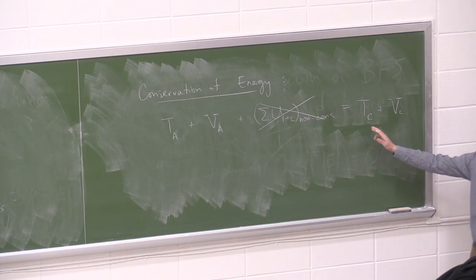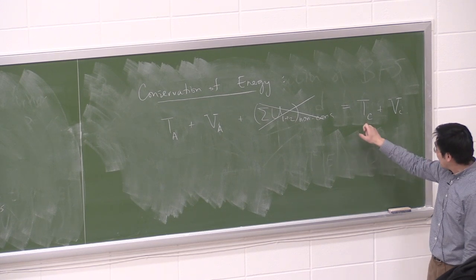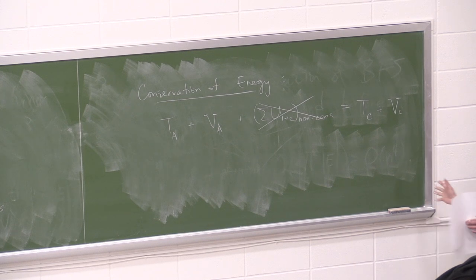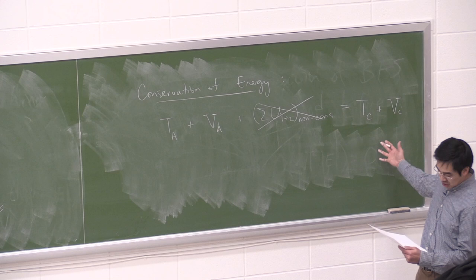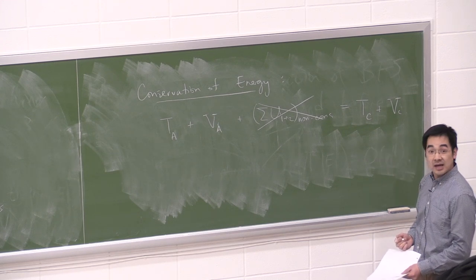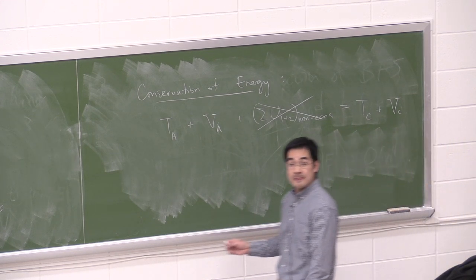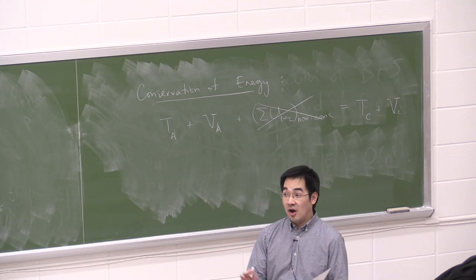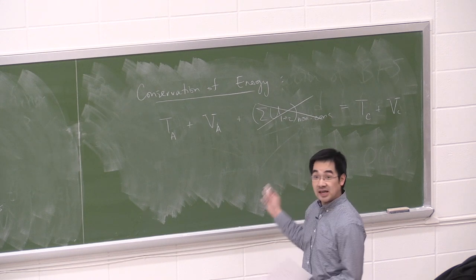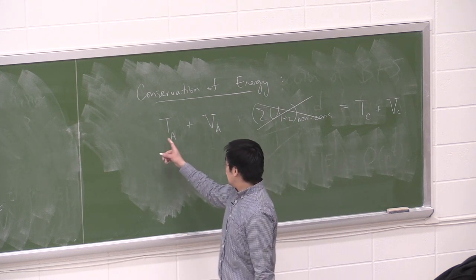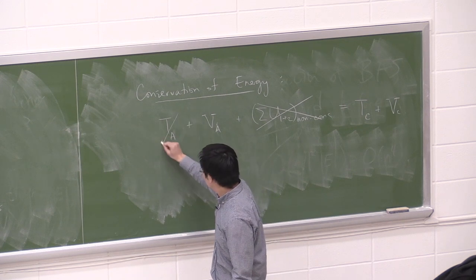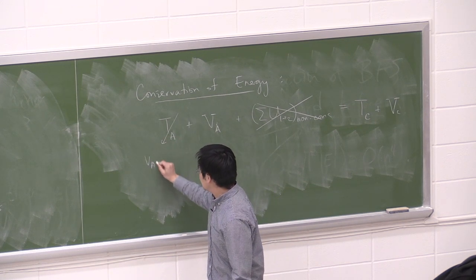The velocity of the collar at C is buried in the kinetic energy term TC, and everything else is a matter of figuring out all the other energies in the system. Starting with TA — that's kinetic energy, but since it starts from rest with VA equal to zero, TA is clearly zero.